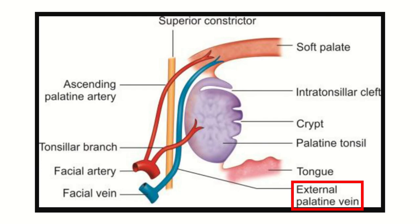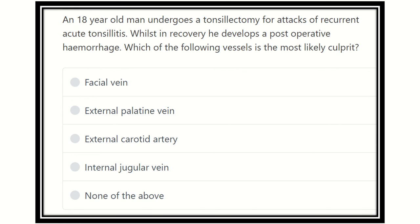Welcome to another question and answer session for the MRCS exam. An 18-year-old man undergoes a tonsillectomy for recurrent acute tonsillitis, and while in recovery he develops postoperative hemorrhage. We have to find out the source of the hemorrhage.